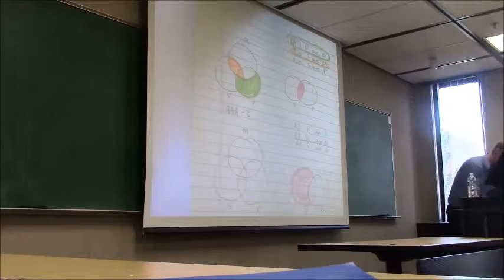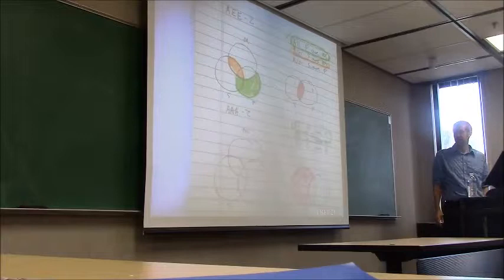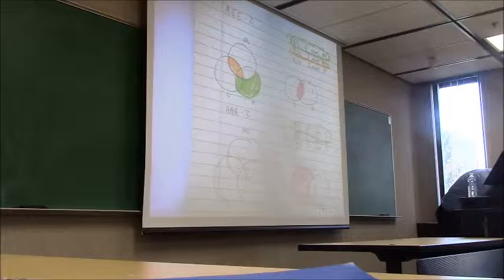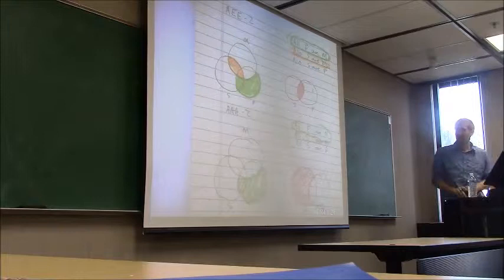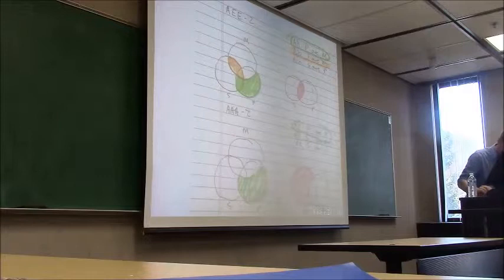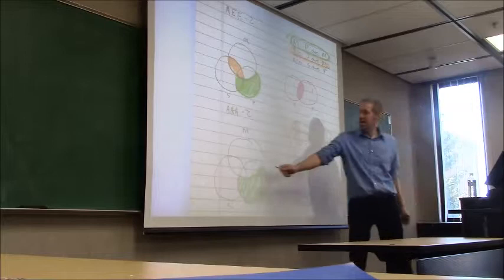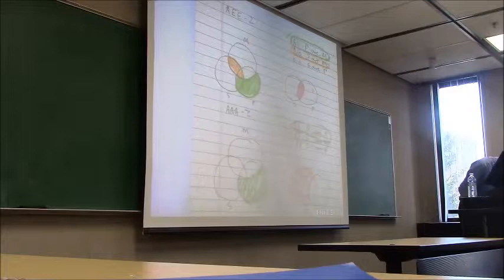It doesn't matter which order we do the premises in for AAA-2, so let's do the major premise first. What circle are we ignoring? S, because it's not mentioned — so we're just looking at P and M. Are we shading the top moon, cat's eye, or bottom moon? Bottom moon — because all the P's are in M, so the part of P outside M is empty. Now the minor premise: we ignore P and look at S and M. Do we shade the top moon, cat's eye, or bottom moon? Bottom moon — we shade the part of S that is outside of M.